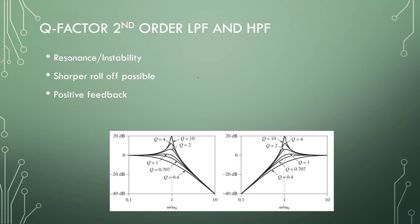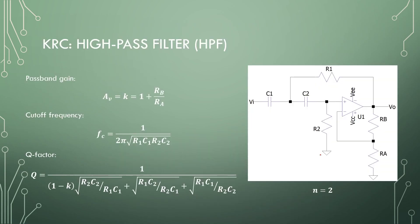First, the Q factor for high pass filters. The KRC uses positive feedback, so we can achieve a notable Q factor. If the Q factor is too high, you can have resonance, but with a high Q factor we can also have a very sharp cutoff or roll off. However, beware that some filters can have instability due to this high Q factor. With lower Q factors we can have more stable filters with a long roll off.